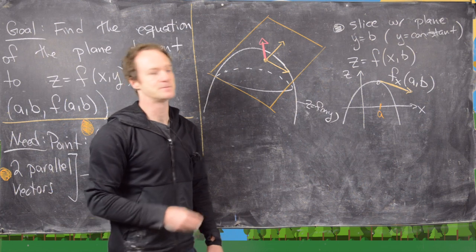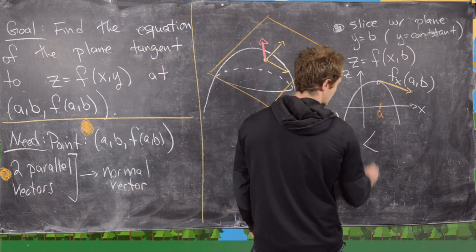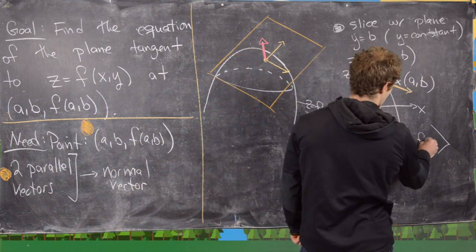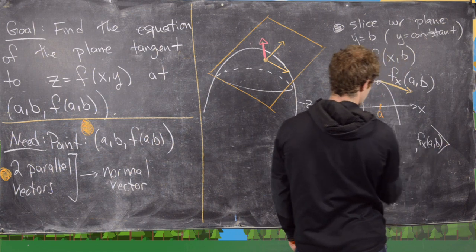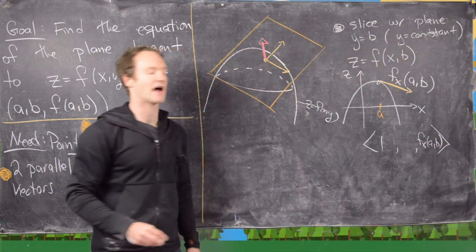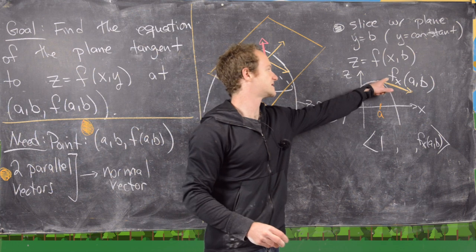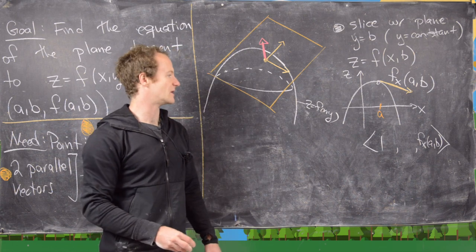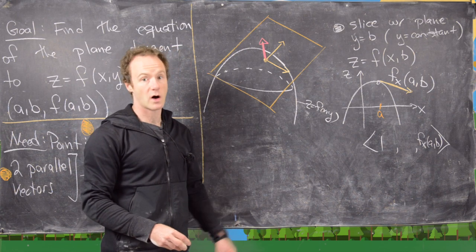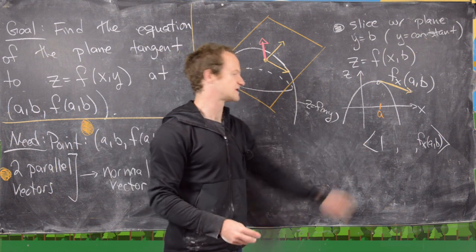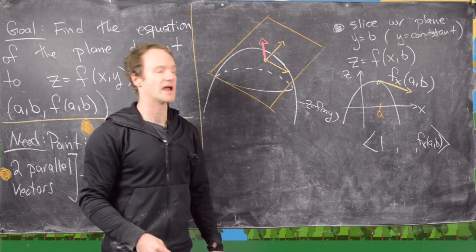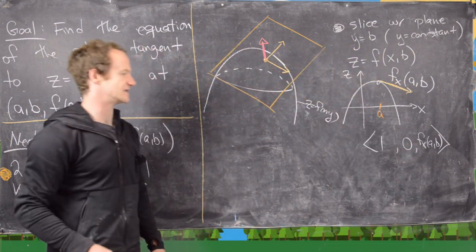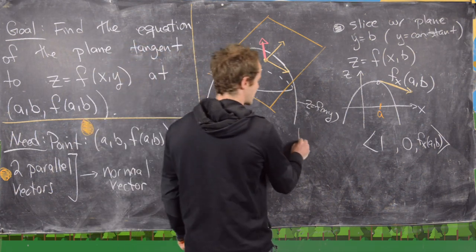Now let's transport this into a vector and represent that tangent direction as a vector. Notice: the x part is changing like 1, the z part is changing like f sub x of a, b (that's the slope — change of z over change of x), and the y part is changing like zero because we set y equal to a constant. So this is tangent vector number one: (1, 0, f_x(a,b)).